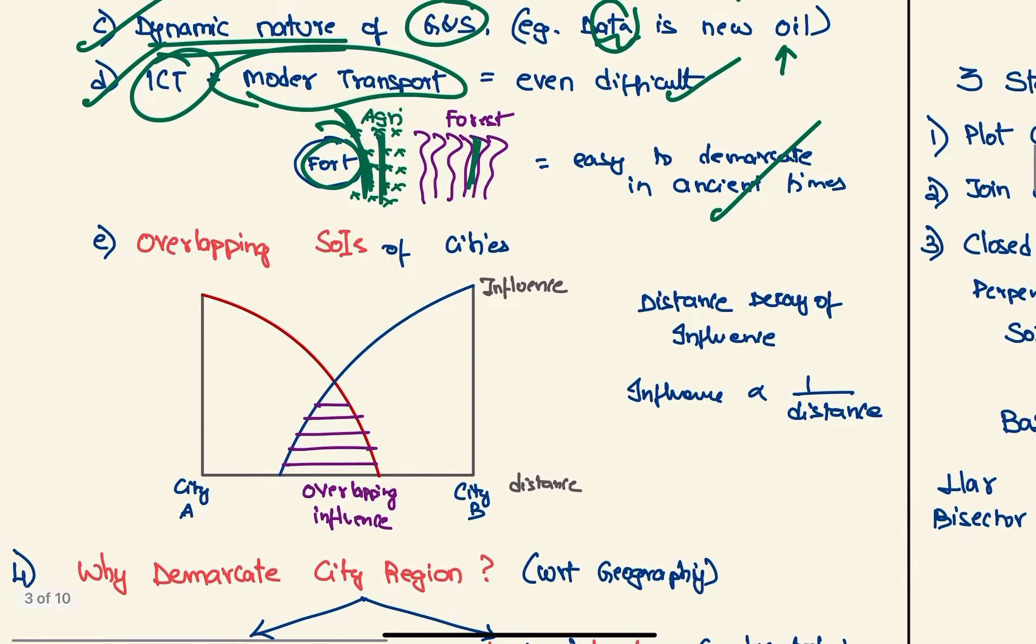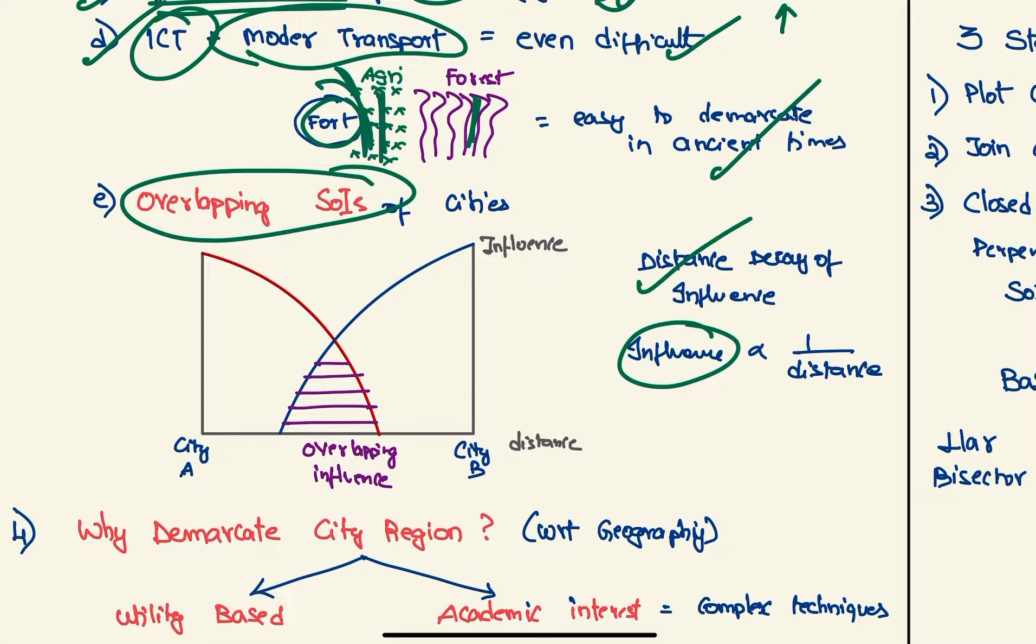And we have overlapping spheres of influence. First of all, influence follows distance decay law with respect to distance. So as the distance from the city increases, its influence keeps on decreasing. But as we can see, this part has influence of both city A and city B, so how to demarcate this is also a challenge.